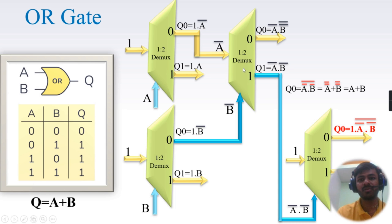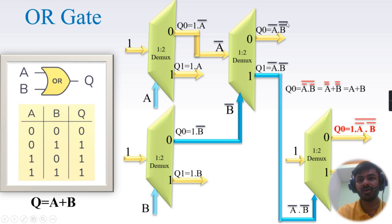For the third demux, the output B-bar from the first demux is the select line, and Q0 from the second demux (A-bar) is the input. Based on select line B-bar, A-bar is routed to the outputs. So Q0 becomes A-bar AND B-bar (with a double bar, becoming A-bar AND B-bar-bar), and Q1 becomes A-bar AND B-bar. Now the Q1 output of this third demux is connected as the select line for the fourth demux.